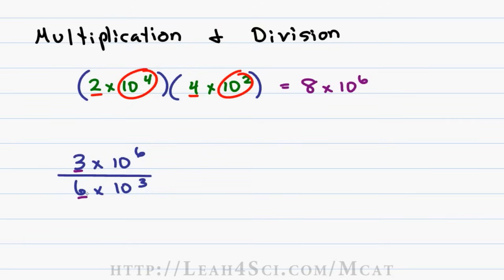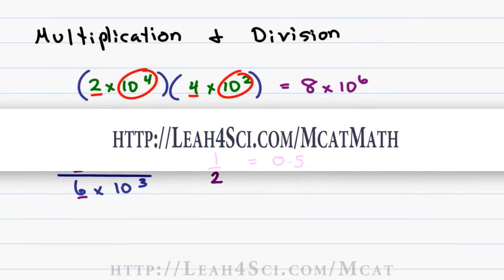3 divided by 6, that's 3 over 6, simplify that to 1 over 2 which is 0.5. This is a fraction that you have to know. If you don't know it yet, grab my MCAT Math Guide on my website leah4sci.com/MCAT Math.